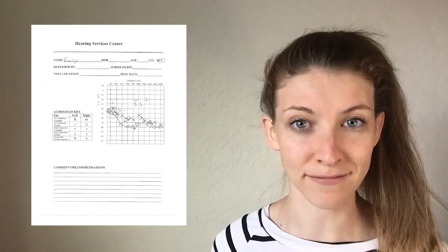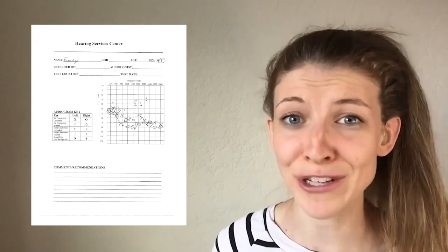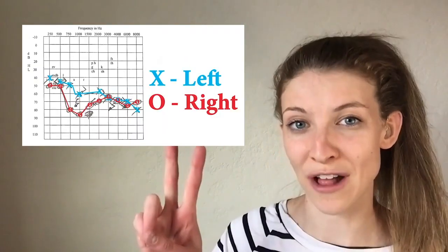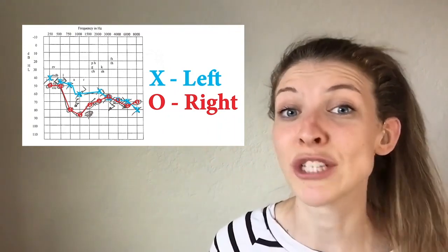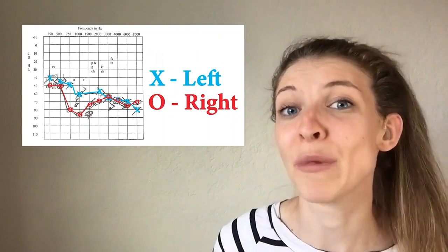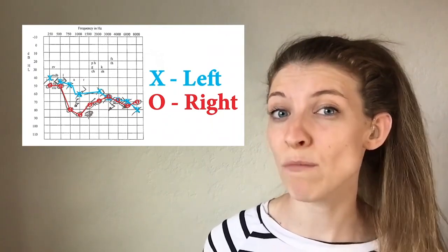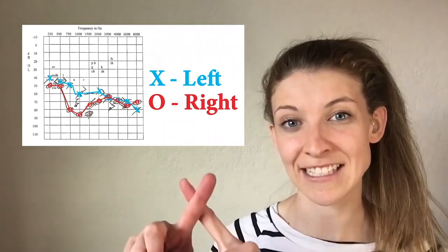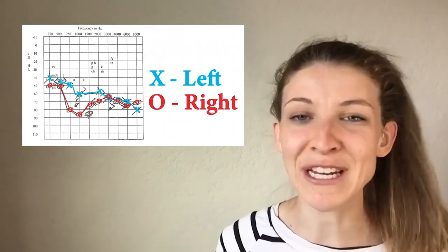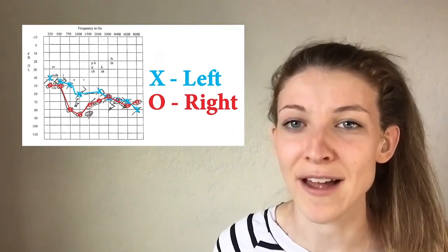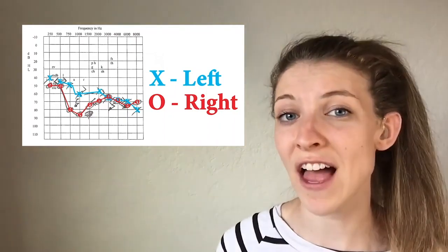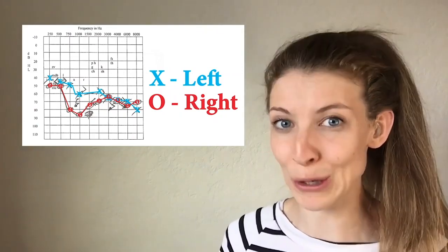The last portion of learning how to read an audiogram is understanding what the symbols and colors mean. If your audiogram is in color, you'll notice two colors: red and blue. Red stands for the right ear — red is right — and blue stands for the left — blue is leftover. Whether or not your audiogram is in color, you'll see symbols on the graph: O stands for the right ear and X stands for the left ear. I remember it because right sounds like 'oh, right!' and X waves are blue like waves in the ocean.